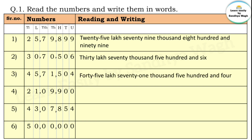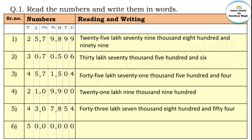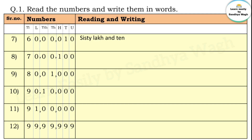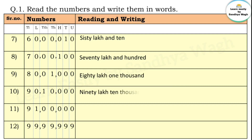Next number: 45 lakh 71 thousand 504. Then 21 lakh 99 hundred. Then 43 lakh 7 thousand 854. Next: 50 lakh. Then 60 lakh and 10 — here there are zeros in between, so 60 lakh and 10. Then 70 lakh and 100. Then 80 lakh and 1000. Then 90 lakh 10 thousand. Then 91 lakh.